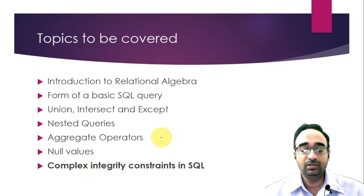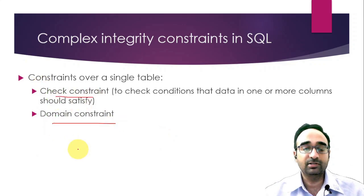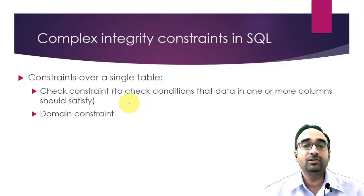We are going to look at two types of constraints: one is the check constraint and another one is the domain constraint. Both of these are table constraints — we apply them on one or more columns in a table.